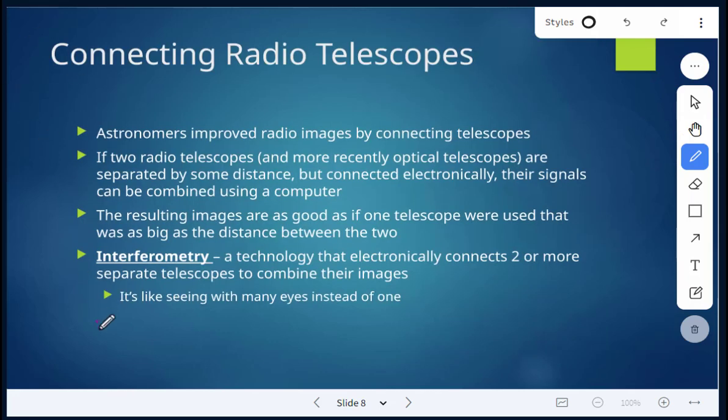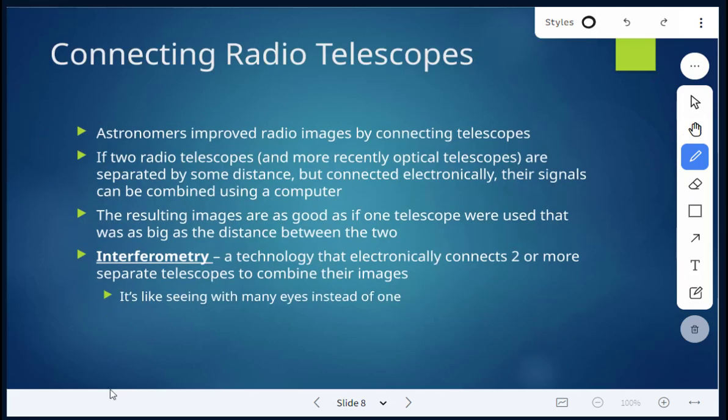So next, connecting radio telescopes. Astronomers continued improvements and they improved radio images by connecting telescopes. So two radio telescopes, and more recently even optical telescopes, they are separated by some distance but they can be connected electronically.